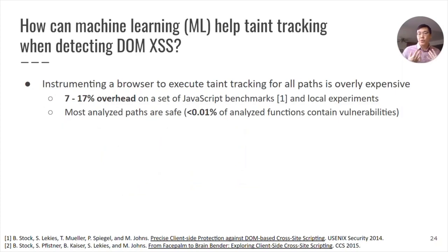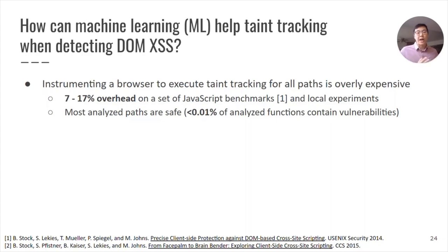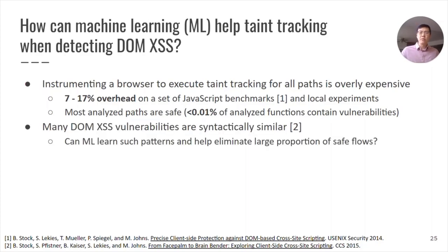While taint tracking is a very helpful tool in detecting DOMXSS, it incurs a high overhead. Prior work and our local experiments show that a 7% to 17% overhead is added to JavaScript benchmarks when instrumenting with taint tracking. In addition, most analyzed paths by taint tracking are actually safe — less than 0.01% of all analyzed functions turned out to be DOMXSS vulnerabilities. Prior work has also found that DOMXSS vulnerabilities are often syntactically similar, suggesting that techniques such as machine learning could help learn these patterns and eliminate a large proportion of these benign flows that would otherwise be analyzed by taint tracking.